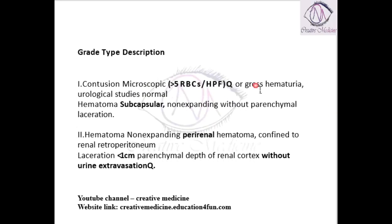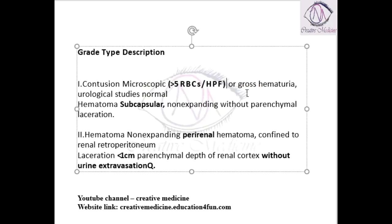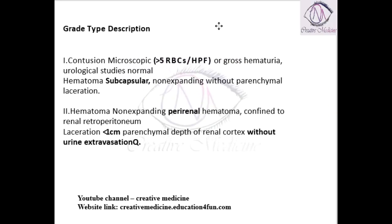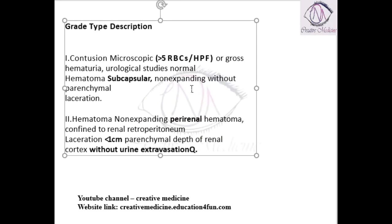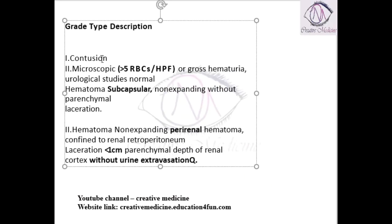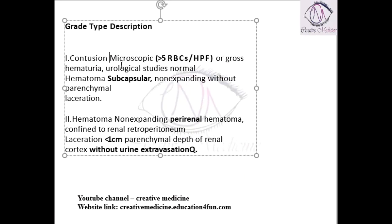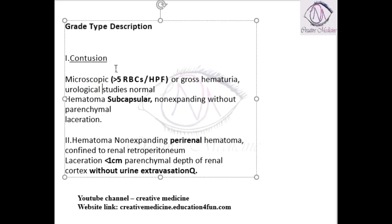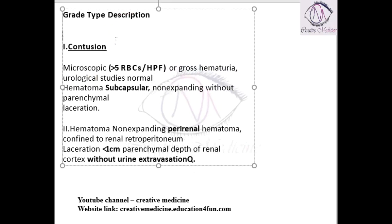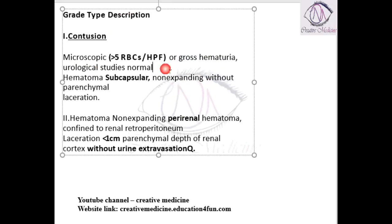In the kidney, based on the injury, we have almost 5 grades. In Grade 1 we have contusion. Contusion is when microscopic or gross hematuria is present, and if you do urological studies they will be normal.